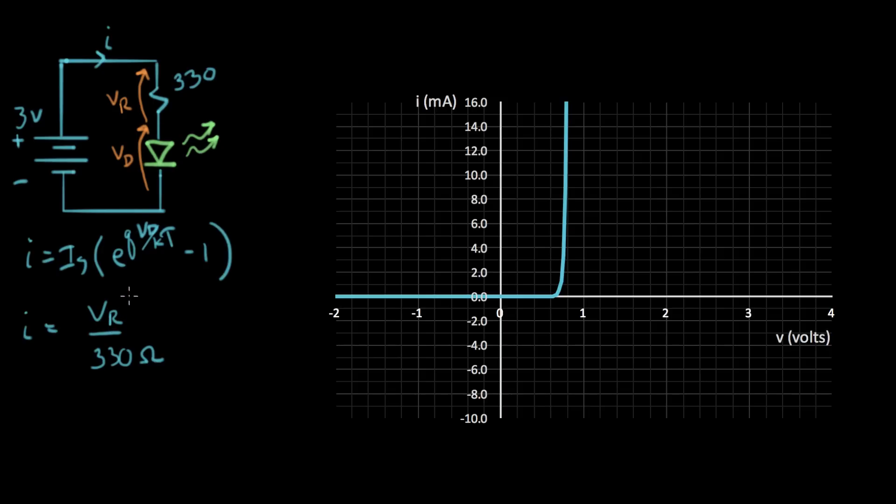But what we're going to do instead is we're going to solve this by graphing, by a graphical method. Here's a graph of the diode. And this is the VD scale. This is V diode. And this is I up here.